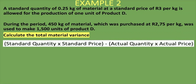Using our formula — total material variance equals standard quantity times standard price, minus actual quantity times actual price — we need to identify each component. We were not given the standard quantity, so we'll calculate it. The standard price is 3 rand per kg. The actual quantity is 450 kg — not 1,500 units, so I hope you didn't make that mistake. The actual price is 2 rand 75 cents per kg.